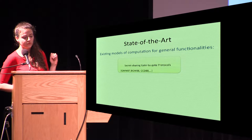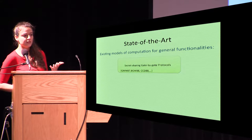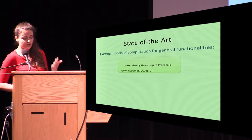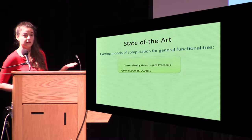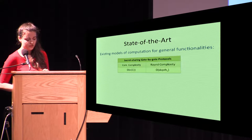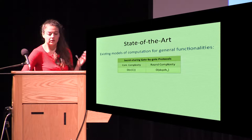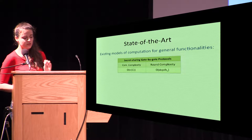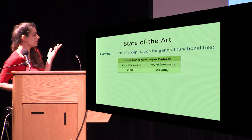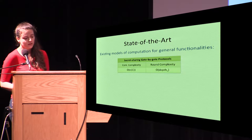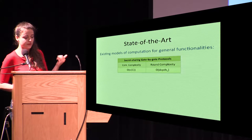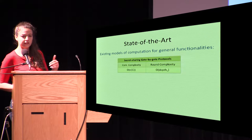These protocols work on secret-shared inputs and evaluate the circuit gate-by-gate. Initially, inputs are secret-shared, and we maintain the invariant that every gate output is a random secret sharing of the output value. All current protocols in this model must communicate per each multiplication gate, so communication complexity is proportional to the circuit size c, where n is the number of parties. The round complexity grows with the multiplicative depth of the circuit.